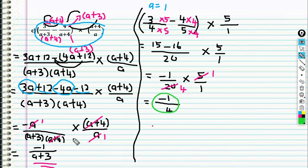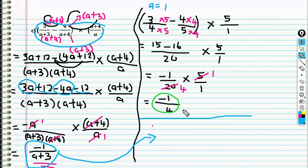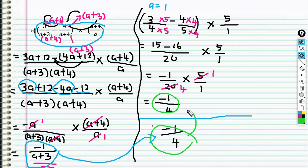Let's check for the fraction that we simplified. We substitute a = 1 into the answer: negative 1 over (1 + 3) = negative 1 over 4. They are the same — negative 1/4 and negative 1/4. That means our answer is correct.